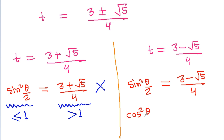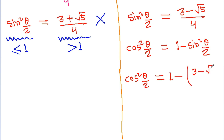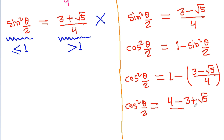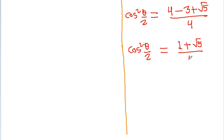We know that cos²(θ/2) = 1 minus sin²(θ/2). Substituting, cos²(θ/2) = 1 minus (3 − √5)/4 = (4 − 3 + √5)/4 = (1 + √5)/4.